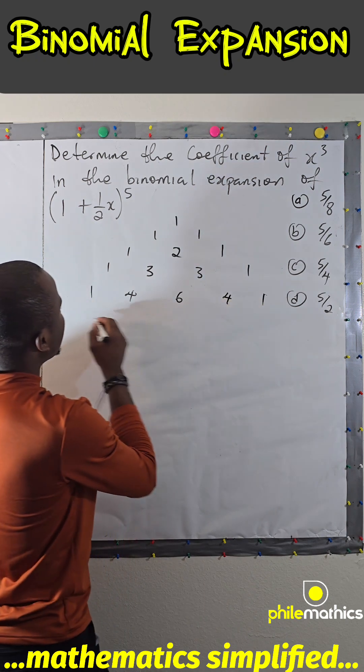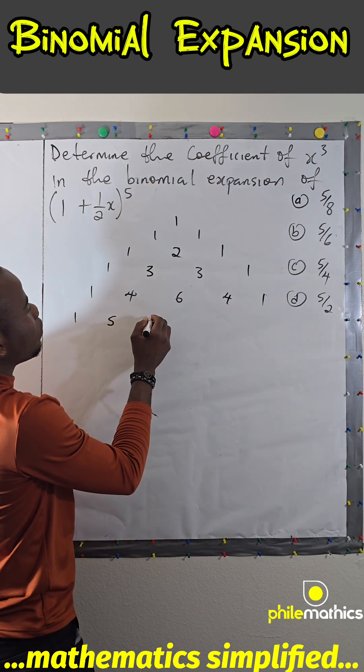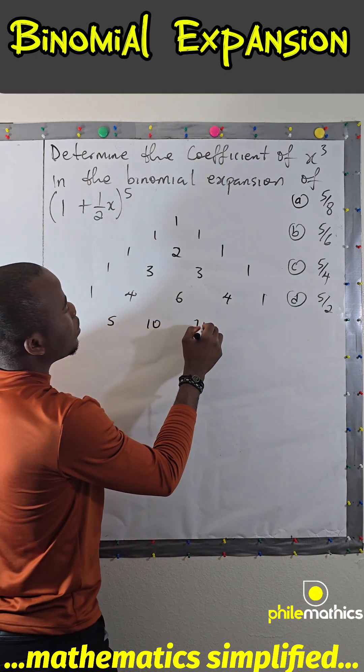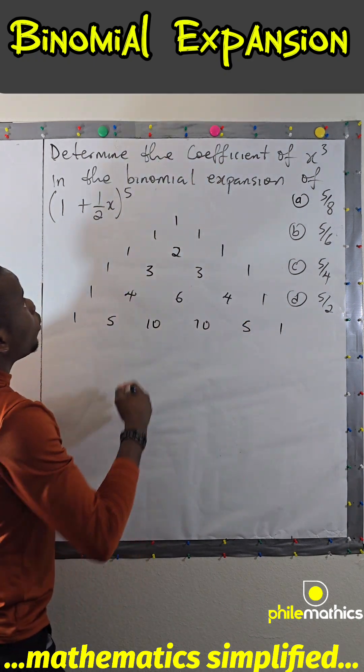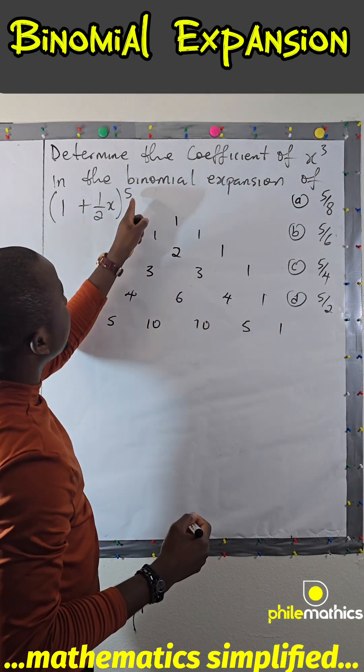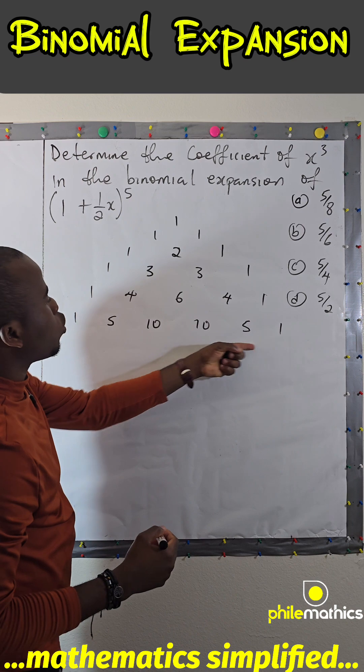Then 1, 5, 10, 10, 5, 1. So because we are interested in up to power 5, we stop here. So these are the coefficients when we expand this.